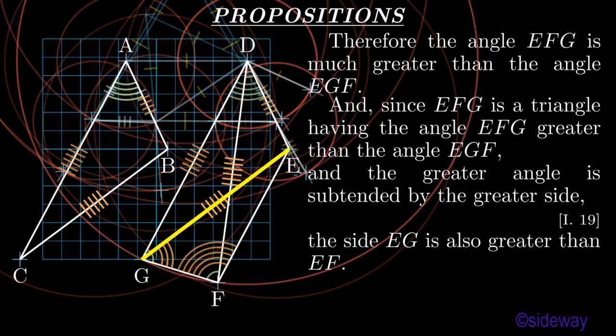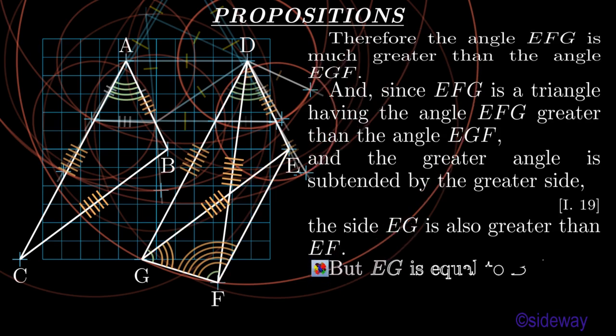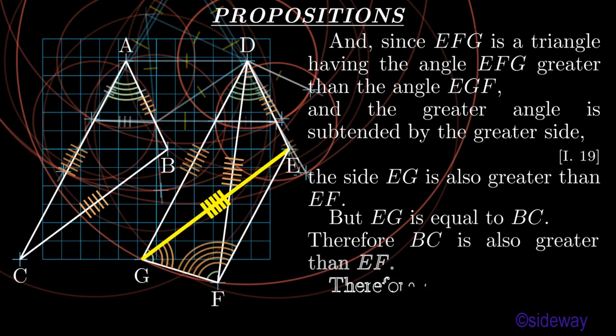But EG is equal to BC. Therefore BC is also greater than EF. Therefore, etc. What was to be shown?